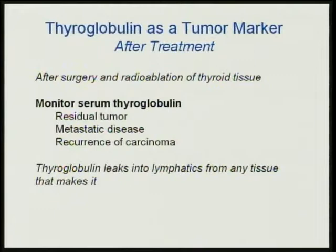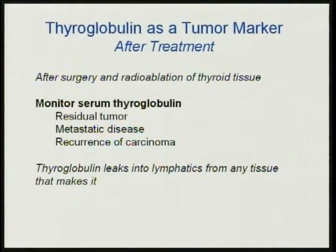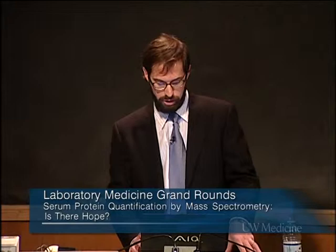We don't use thyroglobulin to screen people for thyroid cancer — we only use it after treatment. By treatment I mean after surgery or radioablation, removing the thyroid tissue from the human being altogether. Then we can monitor serum thyroglobulin to look for recurrence of disease or, in the case of immediately after treatment, looking for residual tumor at the surgical bed or potentially even metastatic disease. Thyroglobulin somehow leaks into the lymphatics from any tissue that makes it. Therefore, for differentiated thyroid carcinoma and many anaplastic tumors, we can actually use serum thyroglobulin to monitor after treatment.